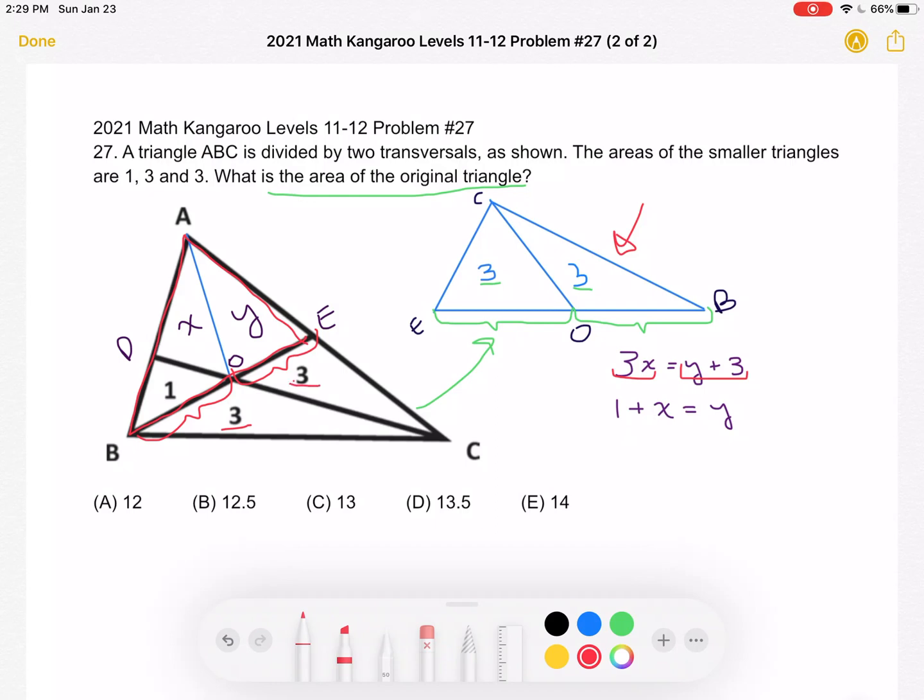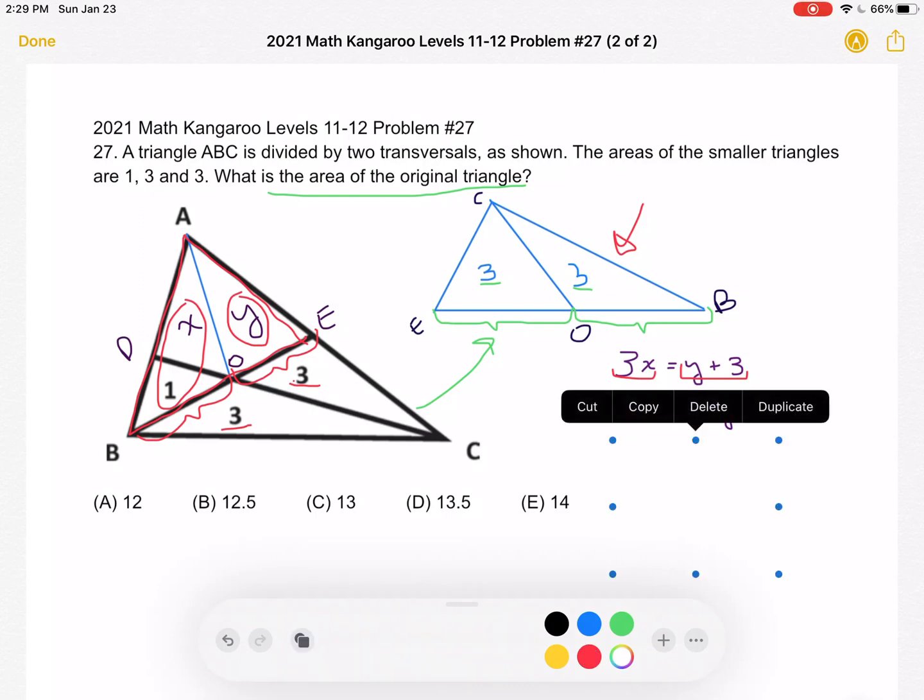So if we look at ABE, the fact that the base of triangle ABO must be equal to that of AOE tells us that this area 1 plus X must be equal to the area Y. Because again, both triangles share the same height and also the same base.